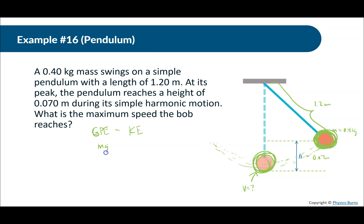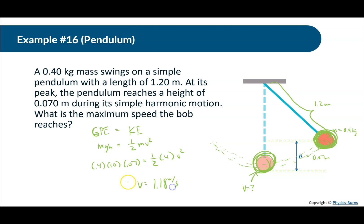So mgh = ½mv². Plugging in: 0.4 × 10 × 0.07 = ½ × 0.4 × v². Solving: √(4 × 0.07 × 2 / 0.4) = 1.18 meters per second. That is the fastest the bob is going to be moving while it oscillates.